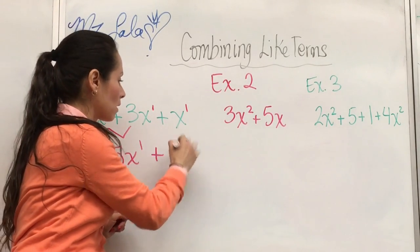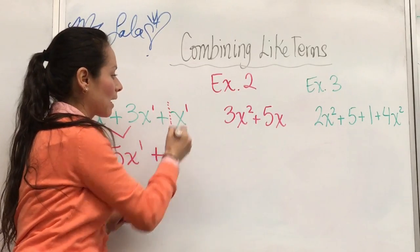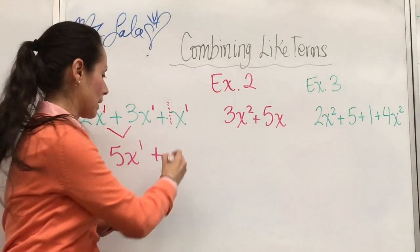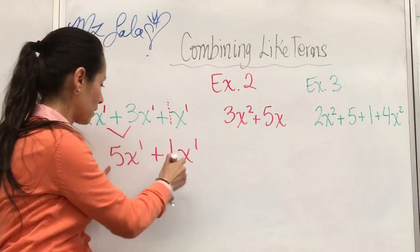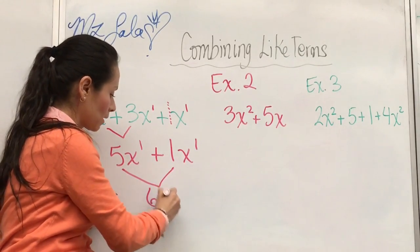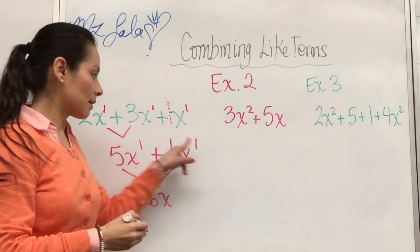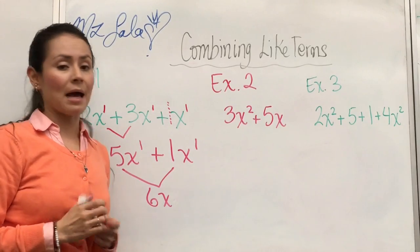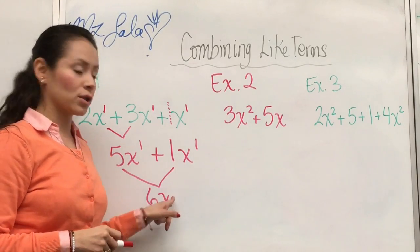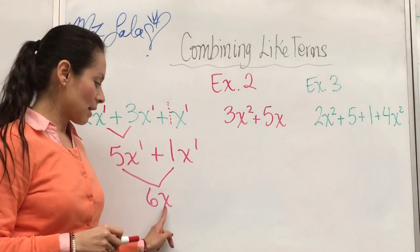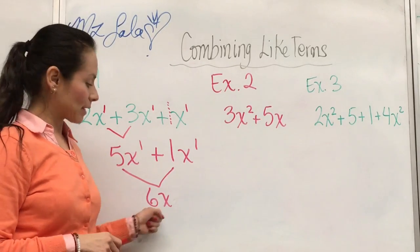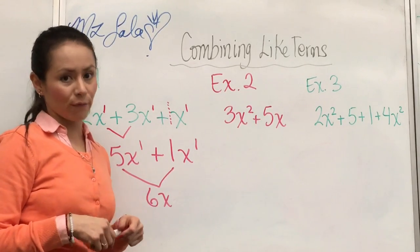And now, this x we talked about in the past has an invisible coefficient of 1. So we would add these coefficients. Variable stays the same. The power stays the same. Do not add up the powers to a 2. In addition, the power stays the same. So your answer would be 6x or 6x to the first power.